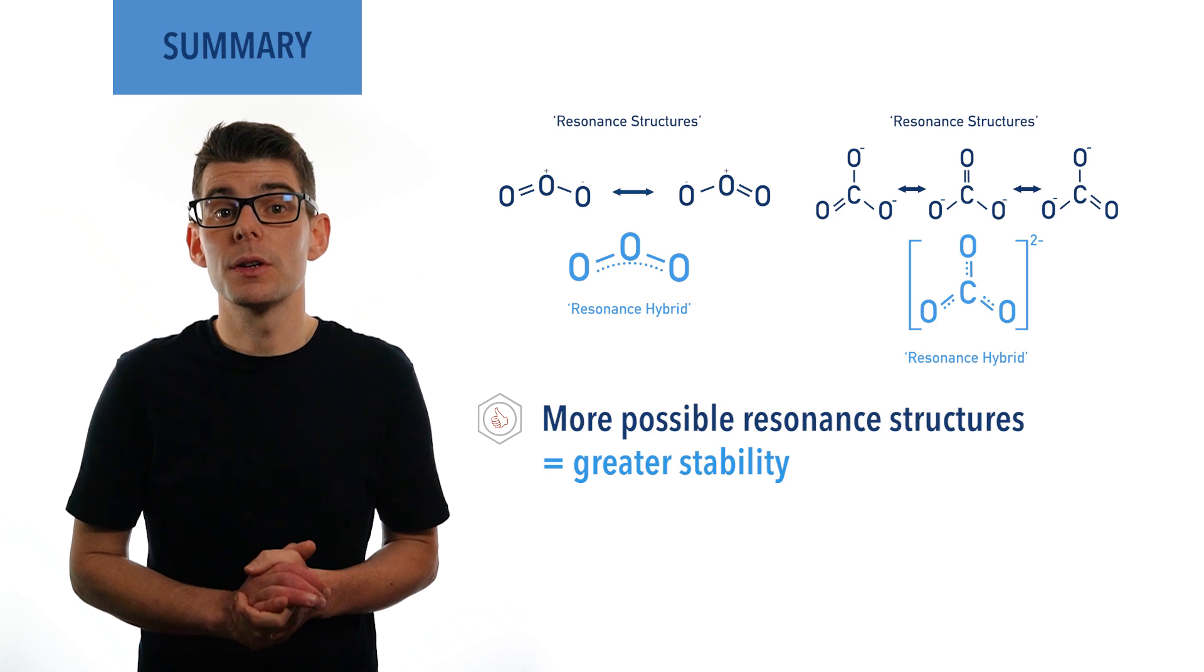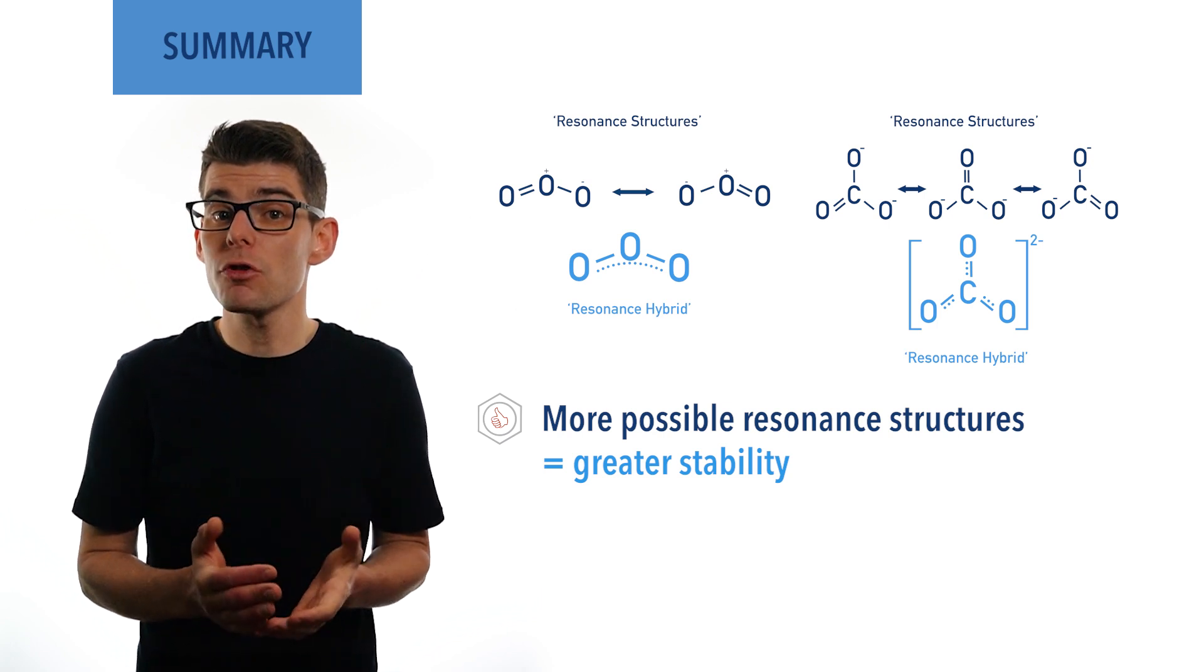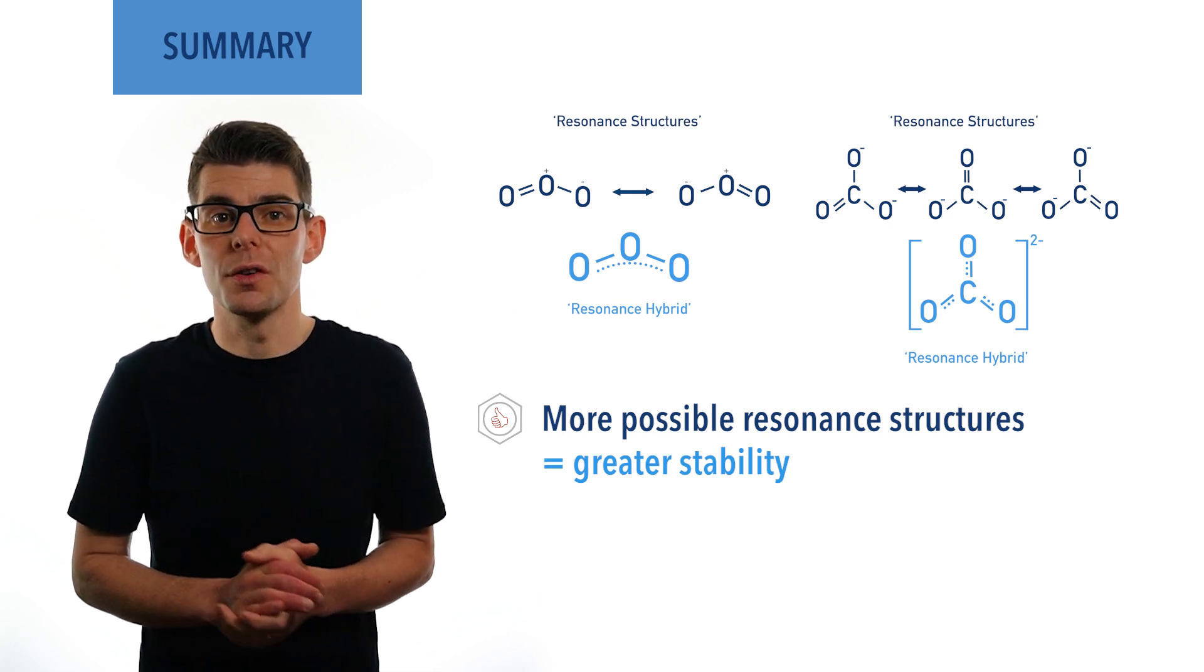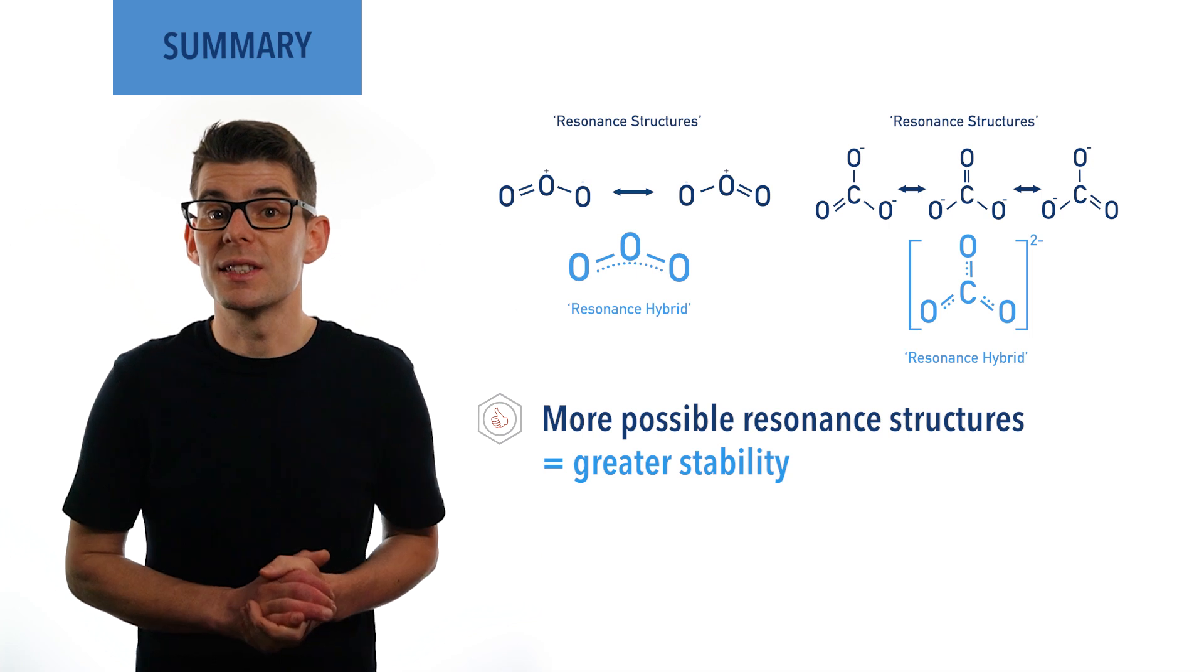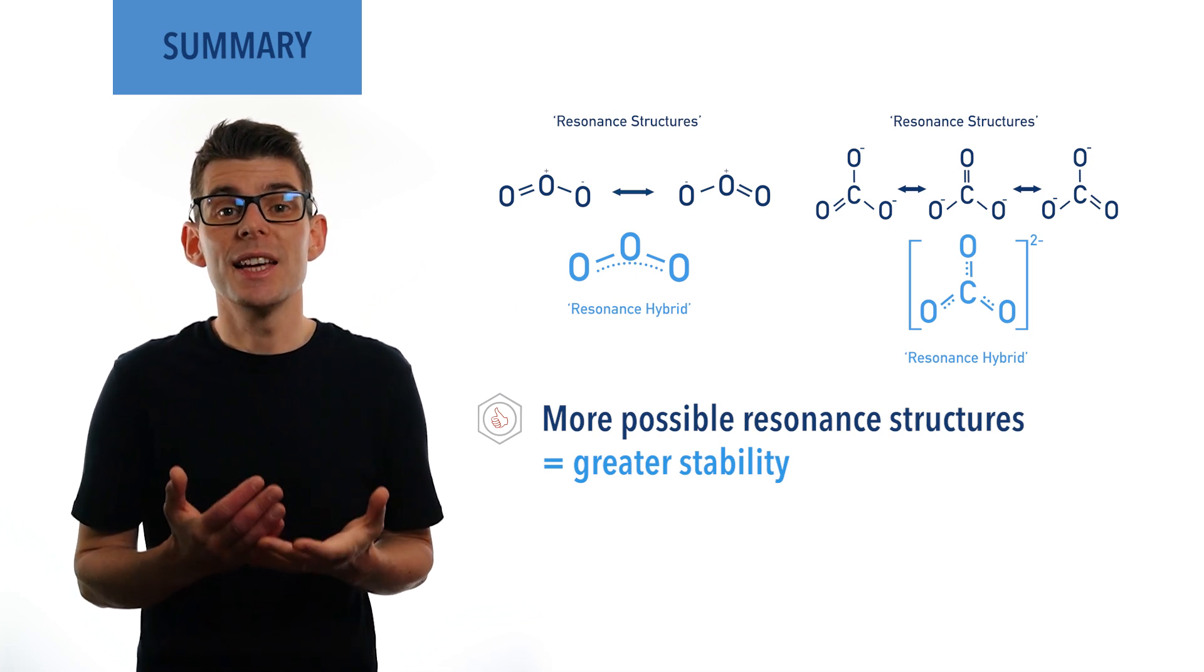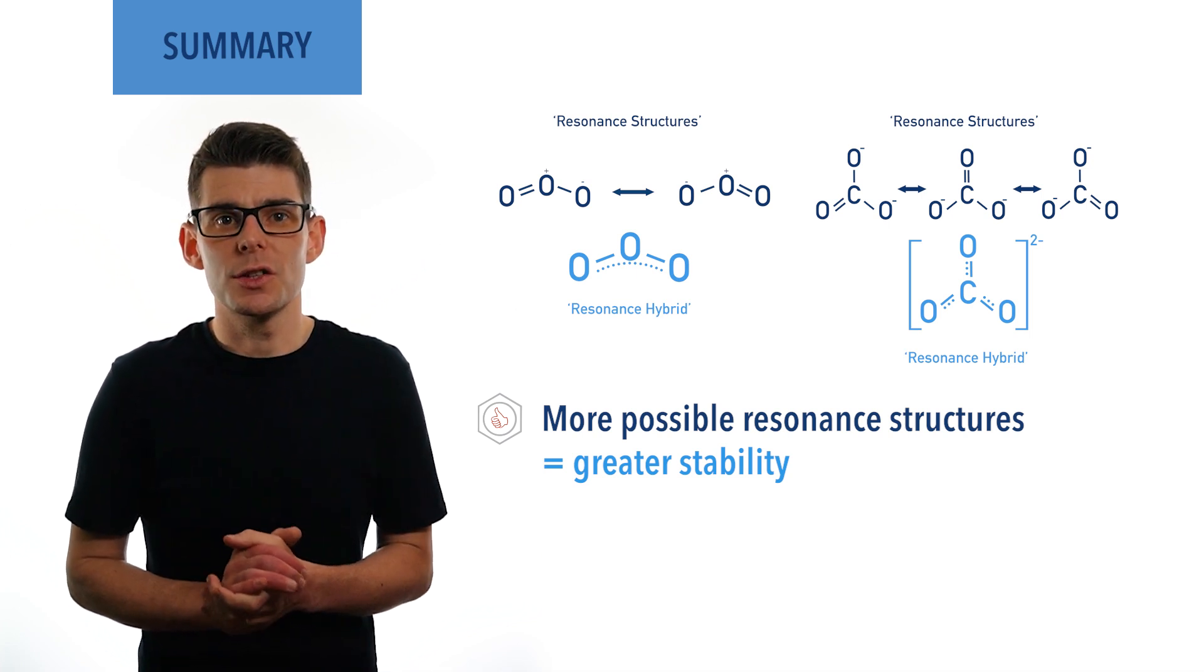For ions, this is because the charge can be more evenly distributed across the whole structure of the ion. Charge that is delocalized and spread out is more stable than localized charges.